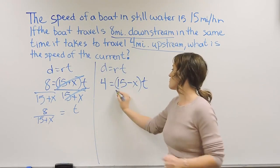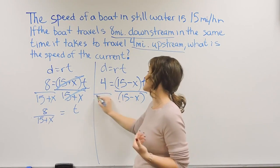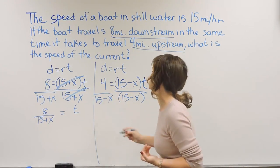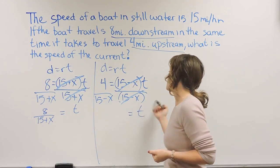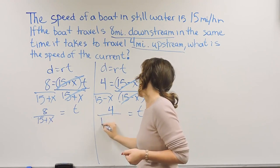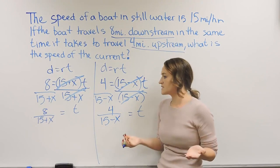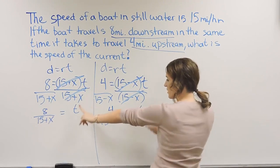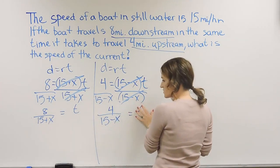Solving the equation on the right for T, so here I would just be dividing by 15 minus X on both sides, so that 15 minus X is going to cancel, and I'm left with T is equal to 4 over 15 minus X. What this is going to do here, I have both equations solved for T, so technically T equals T.